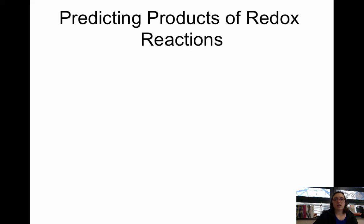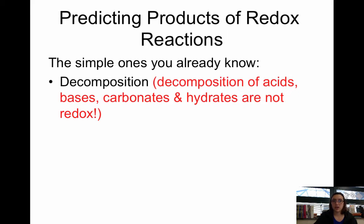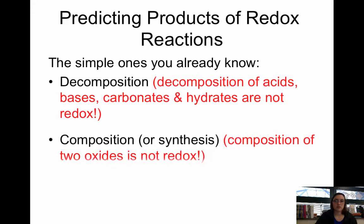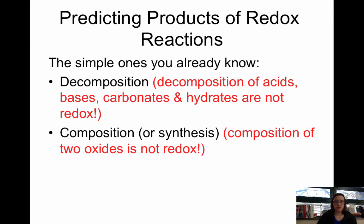As we look at predicting products of redox reactions, there are some that you actually already know, you just didn't realize it was redox. Decomposition reactions are redox. Typically you have one thing breaking down into its elements, and those would have oxidation numbers of zero. Composition or synthesis, if you have two elements combining to form one compound, that's also redox. And then combustion and single replacement. These are all redox reactions in which the oxidation numbers are changing, which means you're transferring electrons.